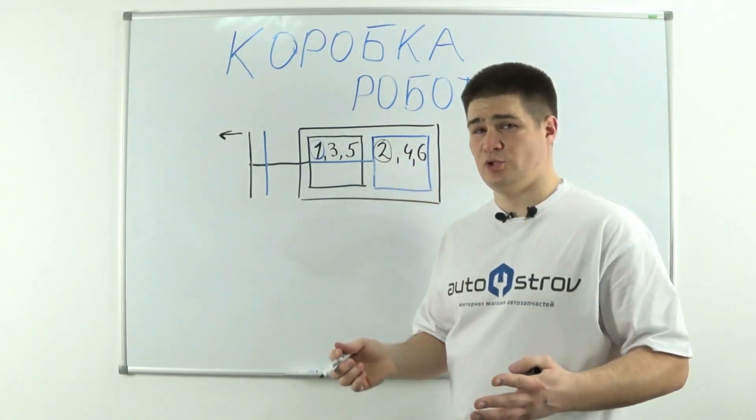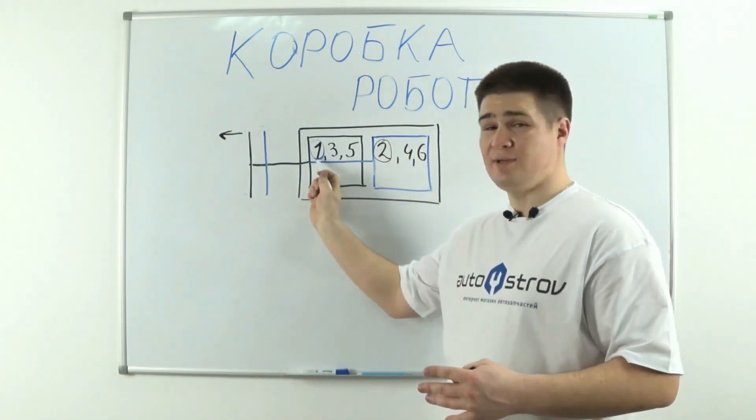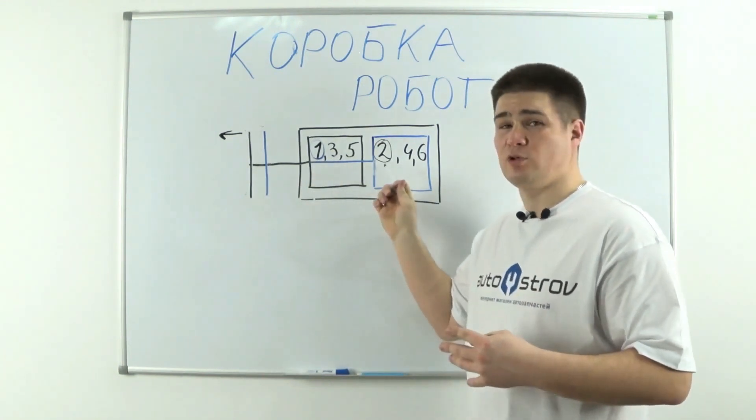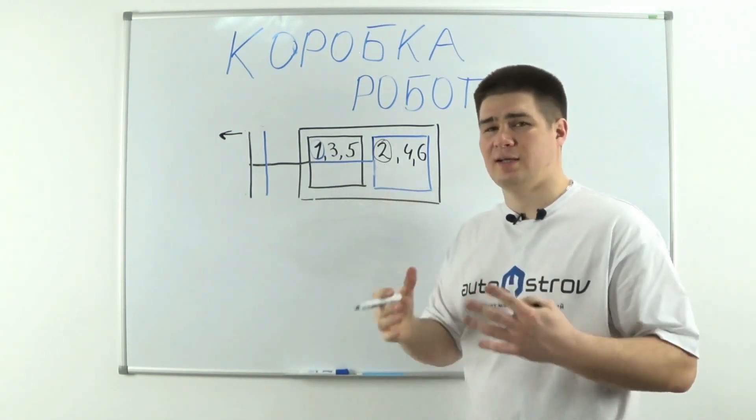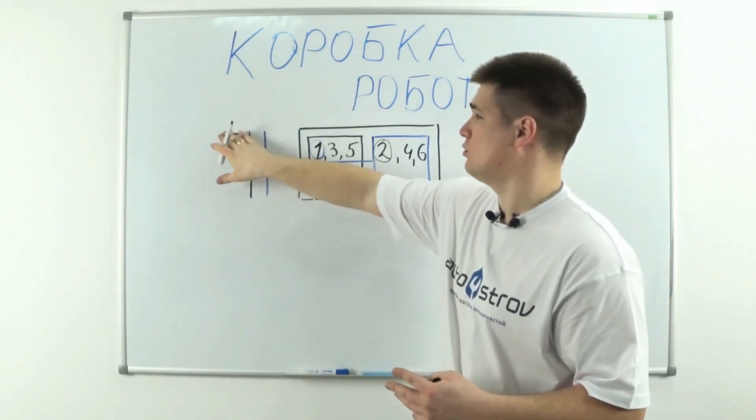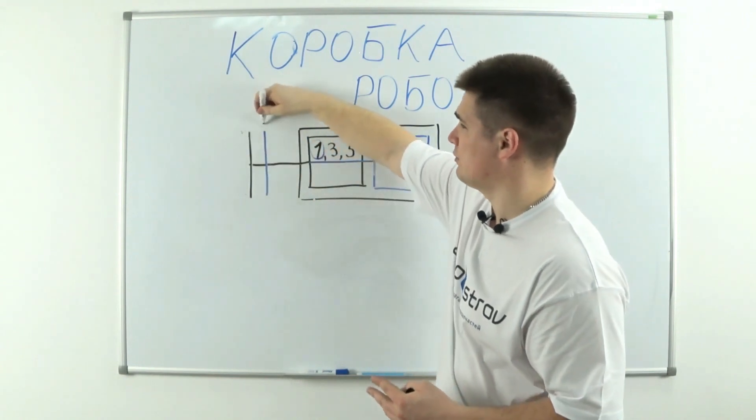Thus, when you are still driving in first gear, the second gearbox is already in second gear. And at the moment when you really need to switch to second gear, one clutch is simply turned off, this black one, and the blue one turns on.